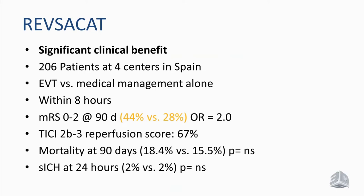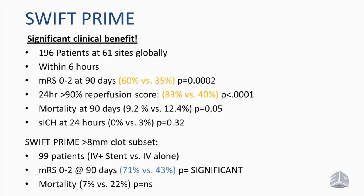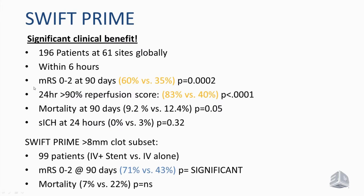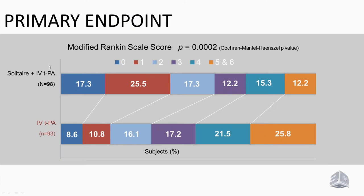Looking at the SWIFT-Prime study: 60% versus 35% — massive superiority of endovascular treatment. For reperfusion of more than 90% at 24 hours: 83% versus 40%. In the sub-analysis of patients with a clot length of more than 8 millimeters: 71% versus 43%. The shift analysis shows, color-coded, a massive benefit for patients achieving a better outcome — modified Rankin Scale 0, 1, and 2 — when treated with endovascular therapy.